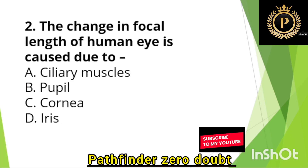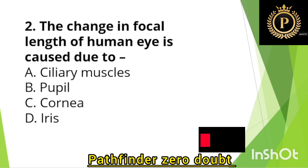The change in the focal length of the human eye is caused due to — Option A: Ciliary muscle.